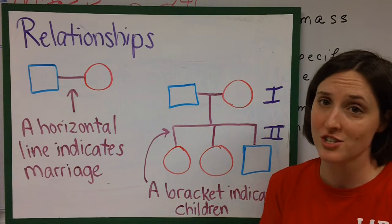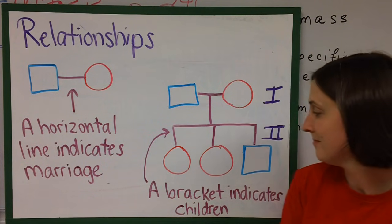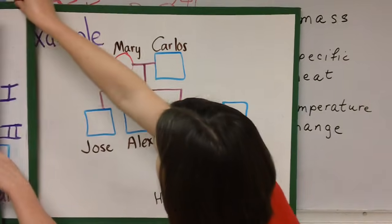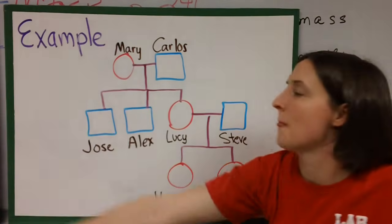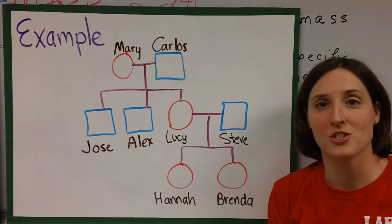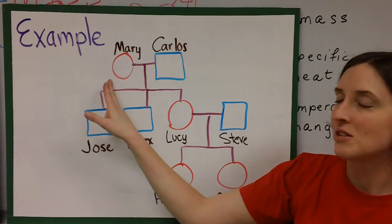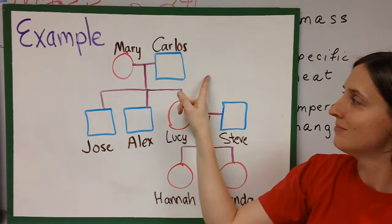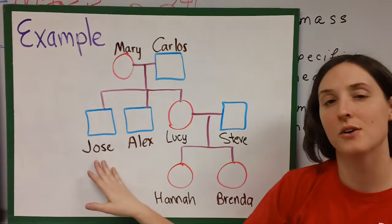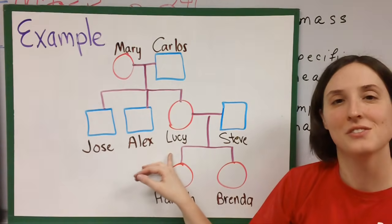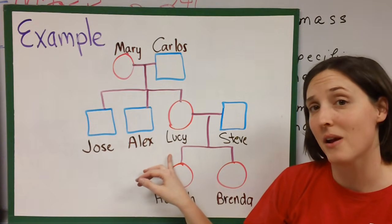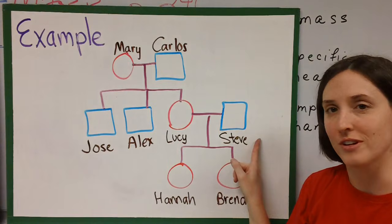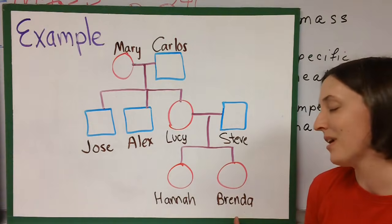We can show many generations on a family tree if we keep going. Here's an example of a family tree. We have Mary who's married to Carlos. They have three children: Jose, Alex, and Lucy. Lucy gets married to Steve and together they have two children, Hannah and Brenda.